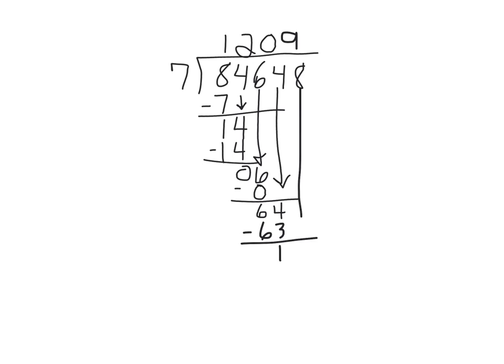Bring down the 8. 7 will go into 18 two times, 2 times 7 is 14, so you end up with a remainder of 4.